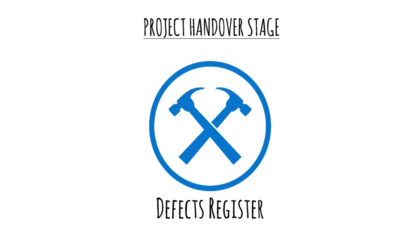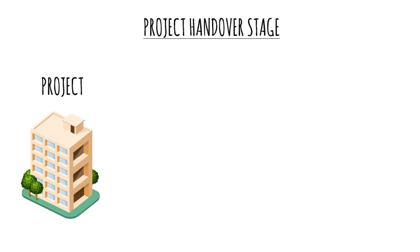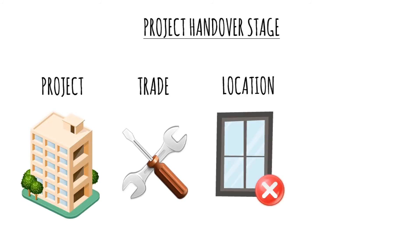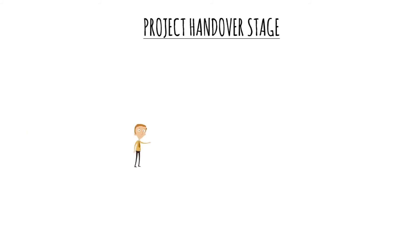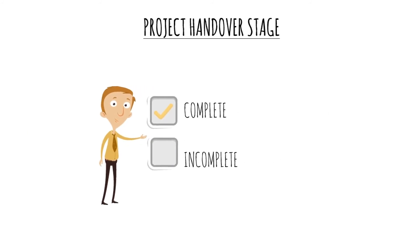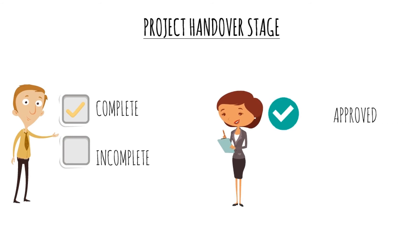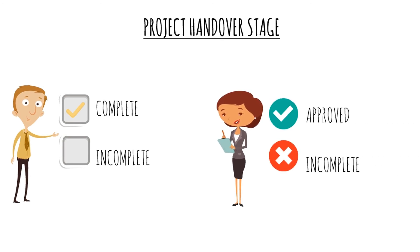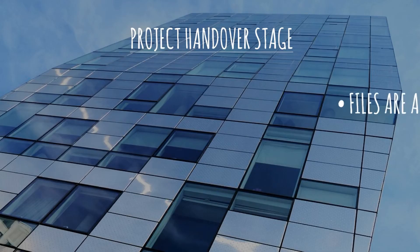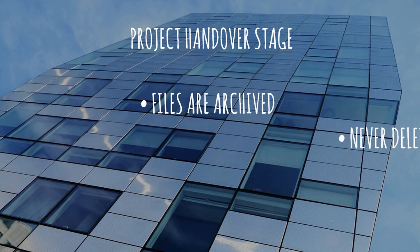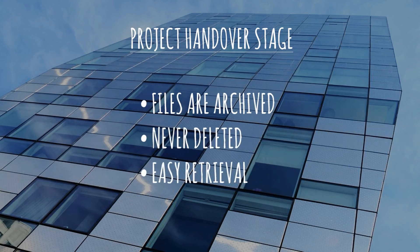The Build Tools defects register logs defects according to project, trade, location, and cost. Complete or incomplete status is easily entered by the subcontractor at fault, to be monitored and approved by the builder. Once the project is completed and handed over, rest assured that all files are archived — not deleted — for easy future retrieval.